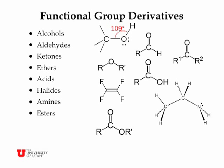Halides are where carbon forms strong bonds to either chlorine, fluorine, or sometimes bromine. Here I've pictured tetrafluoroethylene, which is the monomer unit for Teflon. Amines are ammonia molecules where one or possibly more of the N-H bonds has been replaced by a bond from nitrogen to an alkyl group. And esters are very much like acids, except the hydrogen in the acid functionality has been replaced by another alkyl group, which may or may not be the same as the one bound to the carbon.